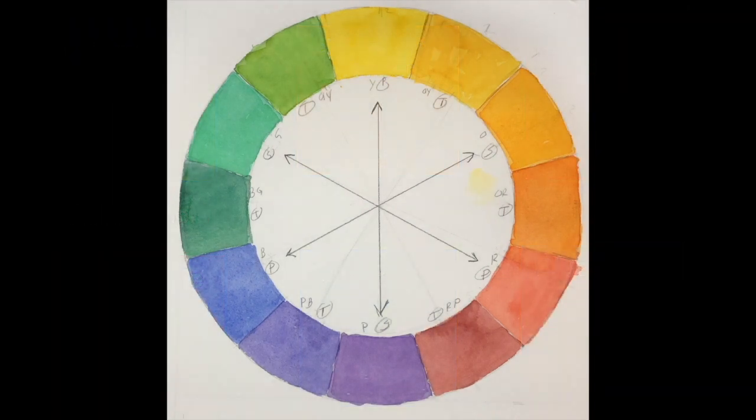While you can easily purchase or Google a color wheel, it's most useful to make one based on the colors that you'll be working with on your own palette. This is also important because transparent watercolor is not as saturated as other types of paint.